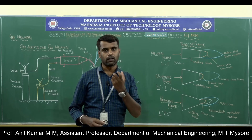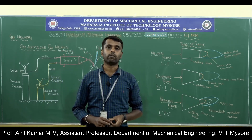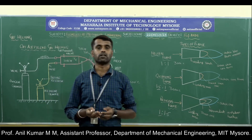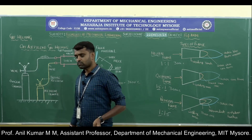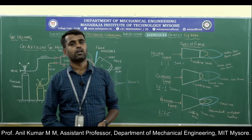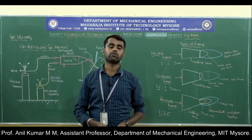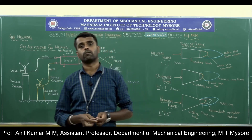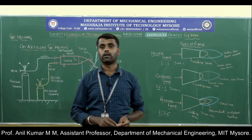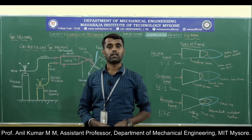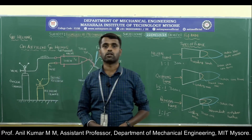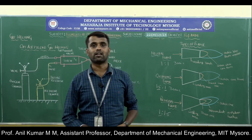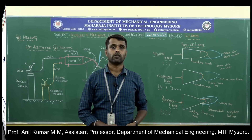Gas welding uses a gas flame as the heat source to heat the edges of the two metal pieces, while arc welding uses an electric arc. This completes the discussion of electric arc welding, TIG welding, MIG welding, and gas welding processes. In the next session, we will discuss another type of joining process — soldering and brazing. Thank you.